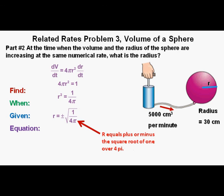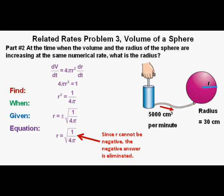For the next step in solving for the radius, we take the square root of both sides of the equation. So r equals plus or minus the square root of 1 over 4 π. And because we're finding a distance and we cannot have a negative radius, we eliminate the negative answer and get r equals the square root of 1 over 4 π.